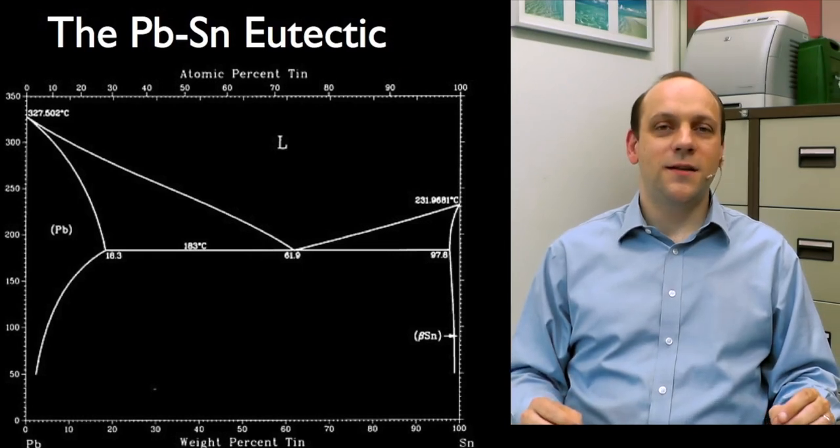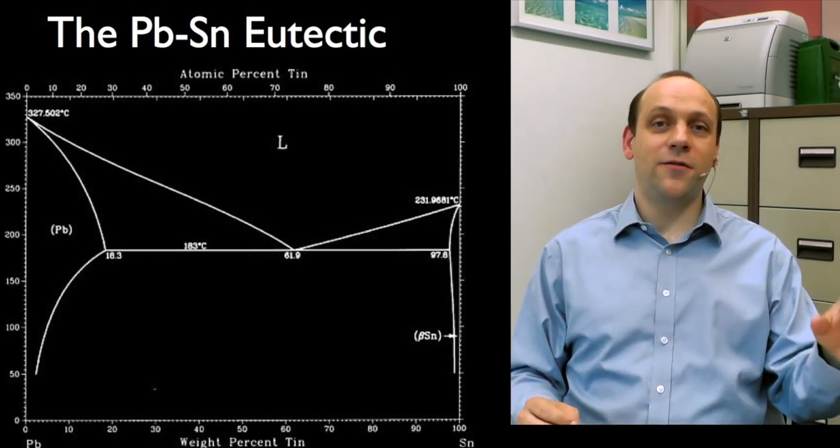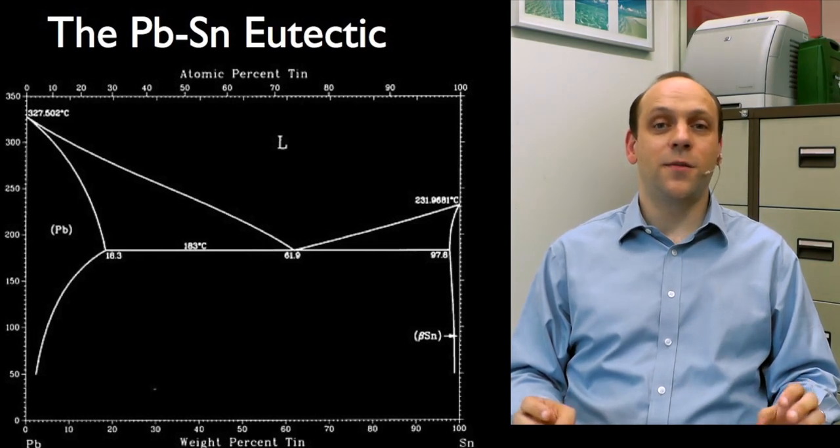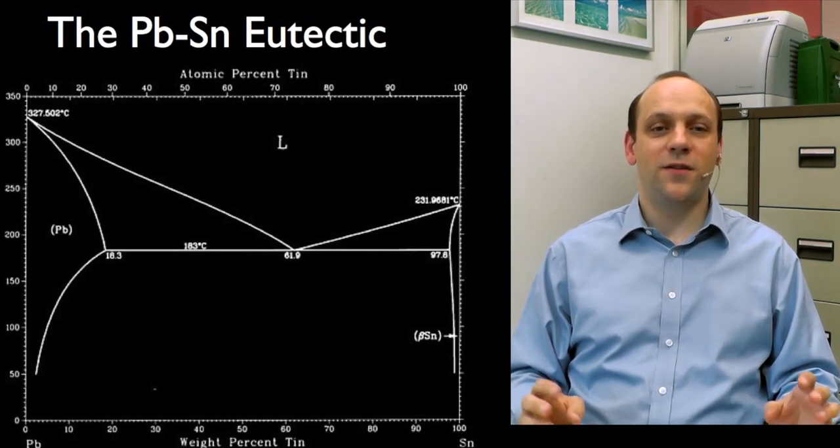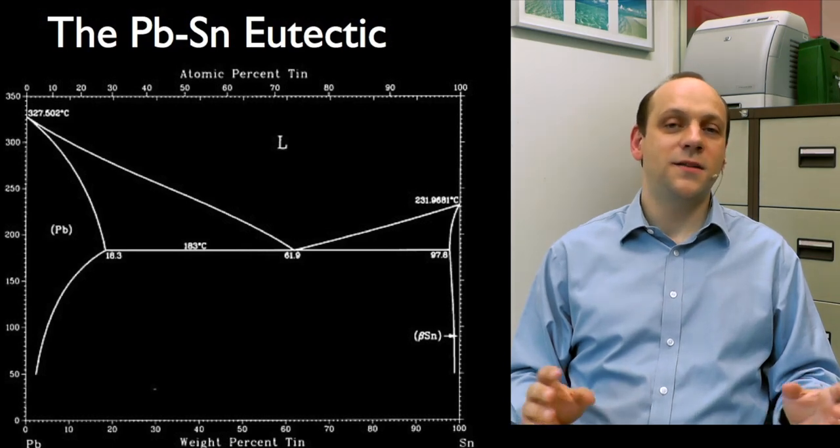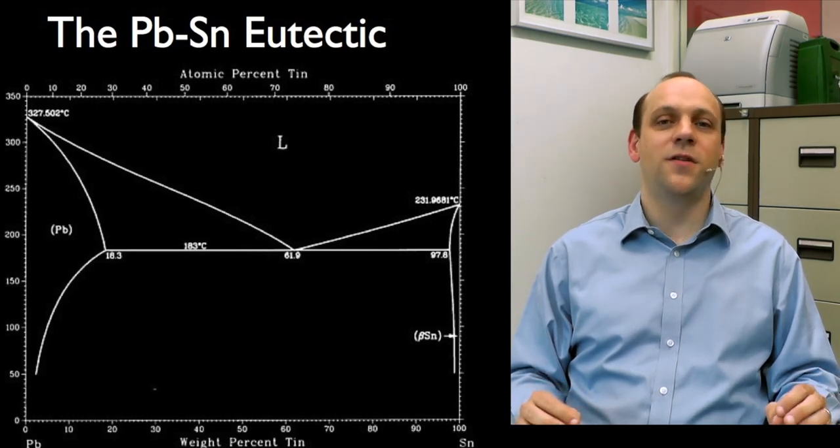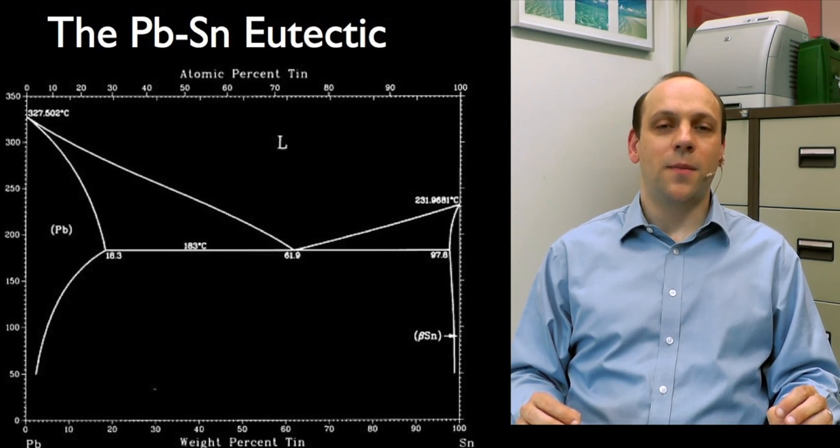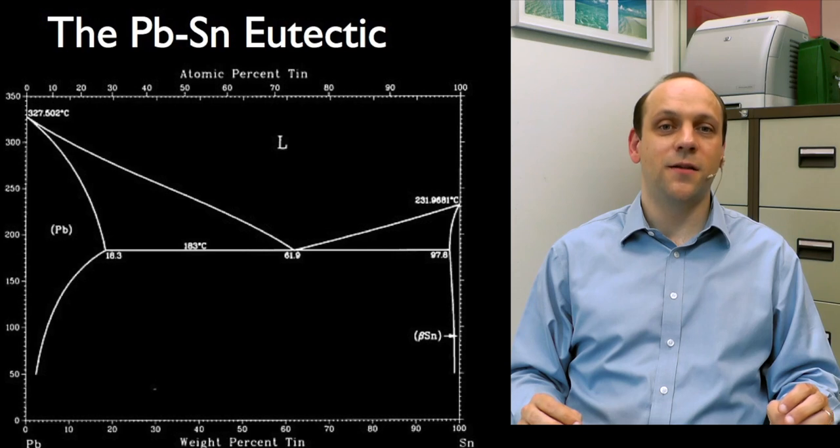So the first one we're going to look at is the lead-tin eutectic. The lead-tin eutectic has a solid lead phase that's got quite a lot of solubility for tin, something like 15-18% tin by weight that you can put into it. And you see that because lead and tin have quite different molar masses, then the atomic percent-tin scale is quite different to the weight percent-tin scale on the top and bottom of the diagram.